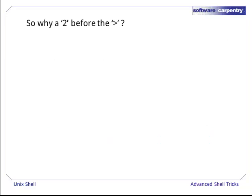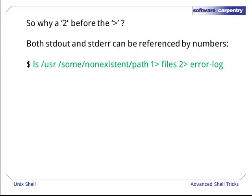So what's this number two all about? The two refers to the standard error channel, whilst one refers to the standard output. By default, greater than on its own refers to standard output, so we could remove the one before the first greater than sign for the same effect.